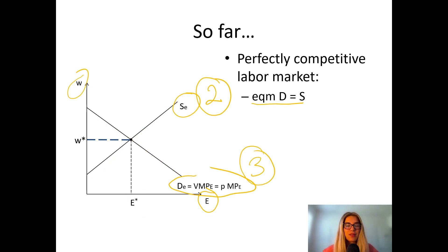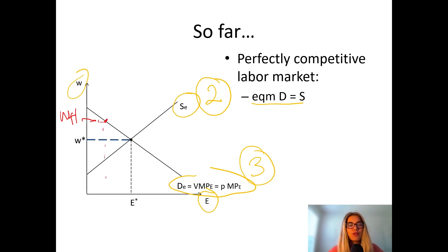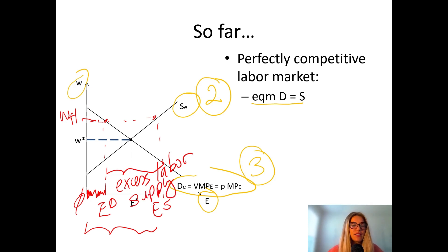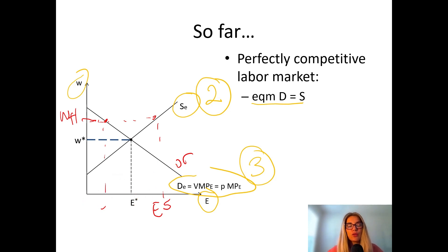I want to talk about some other cases. If wages are too high — WH — go hit the first curve. This is your labor demand quantity and this is your quantity of labor supplied. These many people are looking for jobs, but only these many jobs are available. So this distance is going to be excess labor supply, also called unemployment.